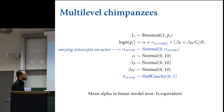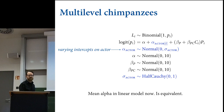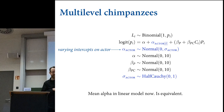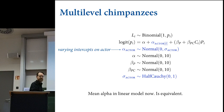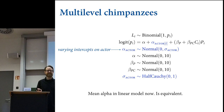What I want to draw your attention to is that I've taken the alpha that used to be in the prior and smuggled it out into the linear model. That's perfectly legal—you can do that whenever you want. This is called the non-centered parameterization of a multi-level model. It works because normal distributions are additive: you can always translate their location by subtracting out the mean, making the mean zero, then put the mean back in the linear model. You get the same predictions.